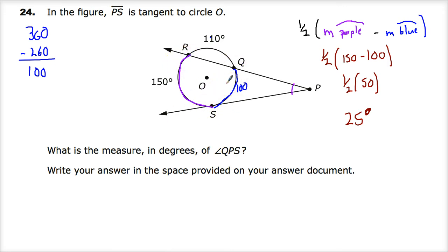Other times it's secant tangent. But whatever you want to do. If you can find this and this, subtract them to find their difference, and then just divide by two, you'll end up with the measure of this angle right here, which is 25.